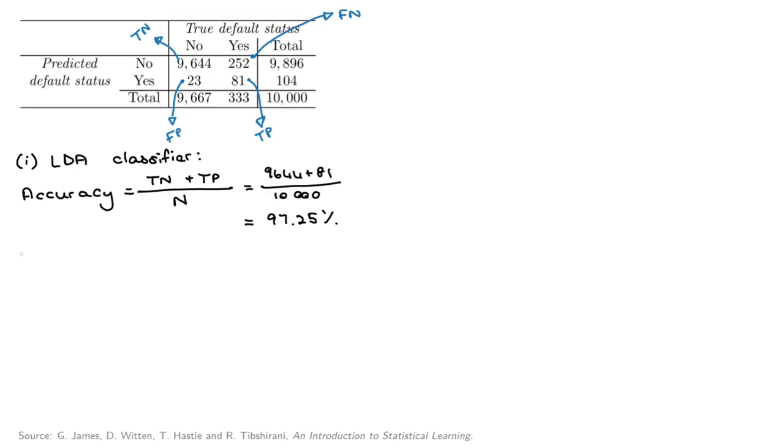Cool. Now let's calculate precision. So precision, again, out of the things that we predicted as positive, how many of them were actually positive? So out of the 81 plus 23 points that we predicted to be positive, 81 of them were actually positive. So here we get a result of 77.88.